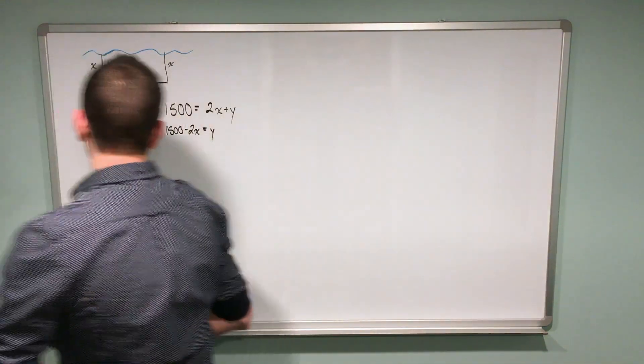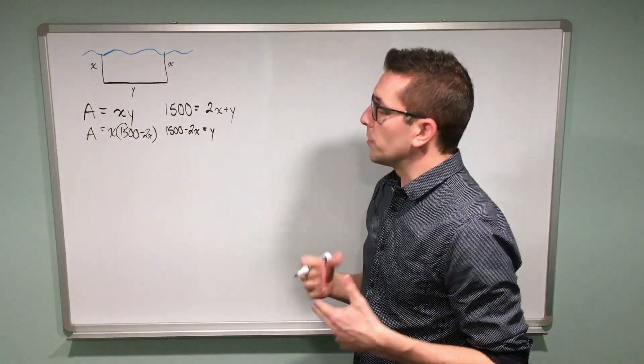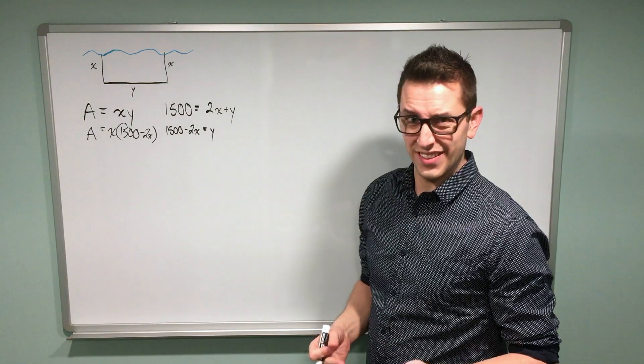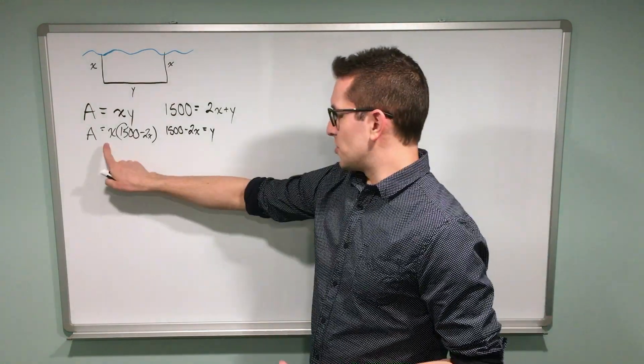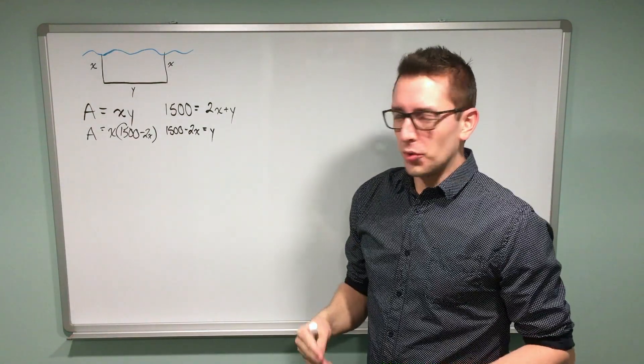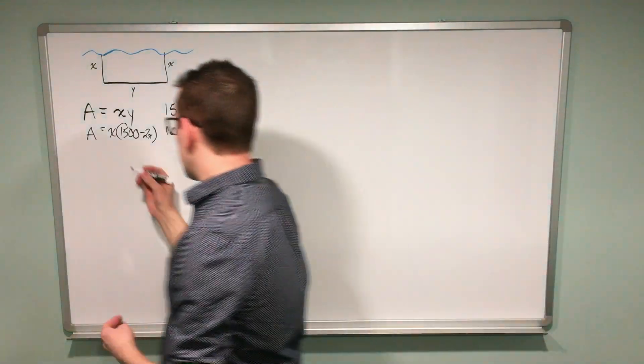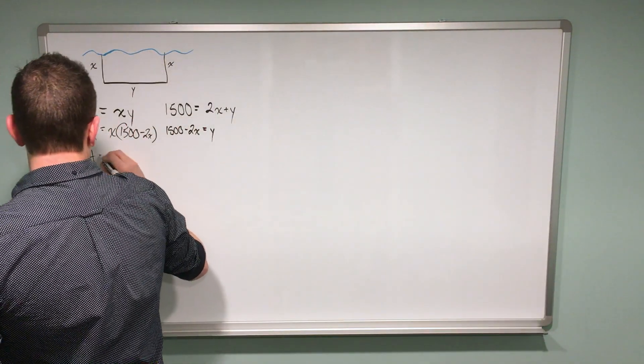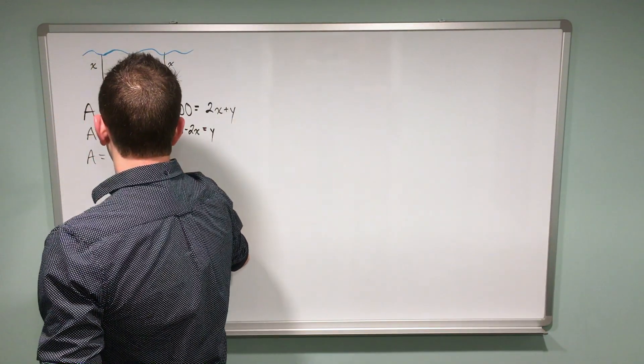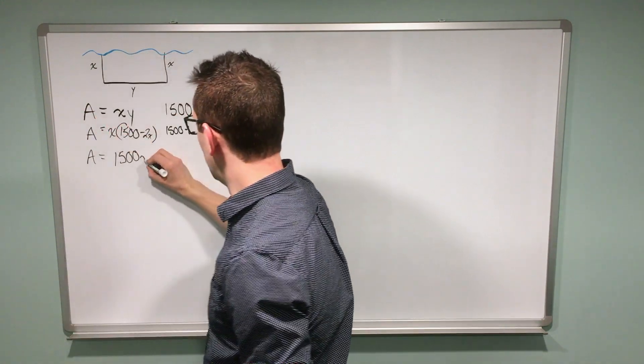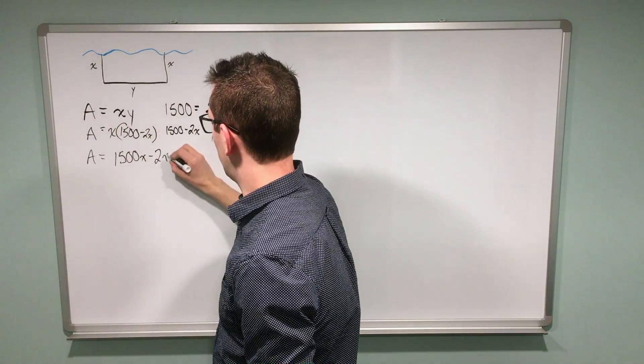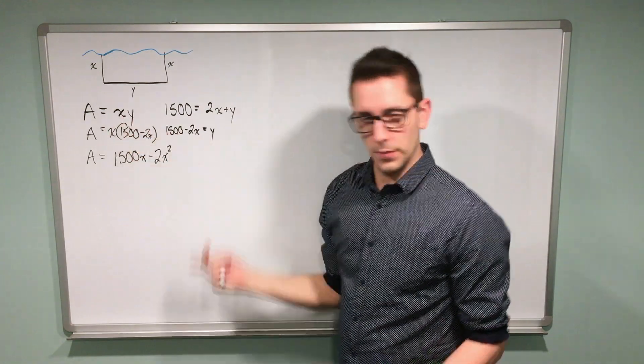This is an expression for area. What I want to do is simplify this expression first before trying to take the derivative. If I tried to take the derivative right now, I'd have to use the product rule. I don't want to do that here. I want to make my life as simple as possible. So I'm going to say my area expression is equal to 1500x minus 2x squared. I've just used the distributive property to simplify.